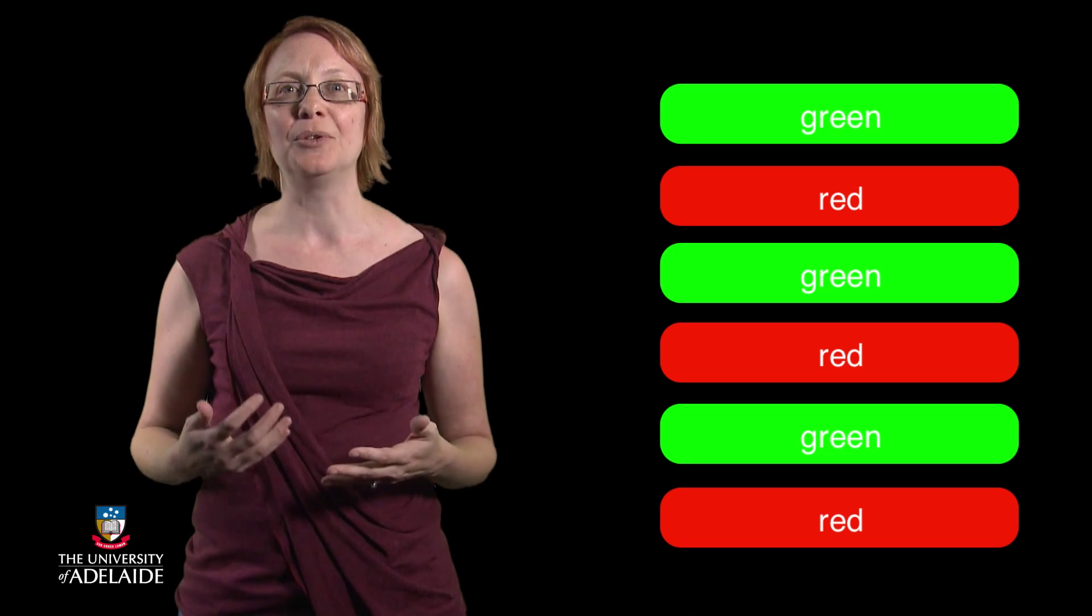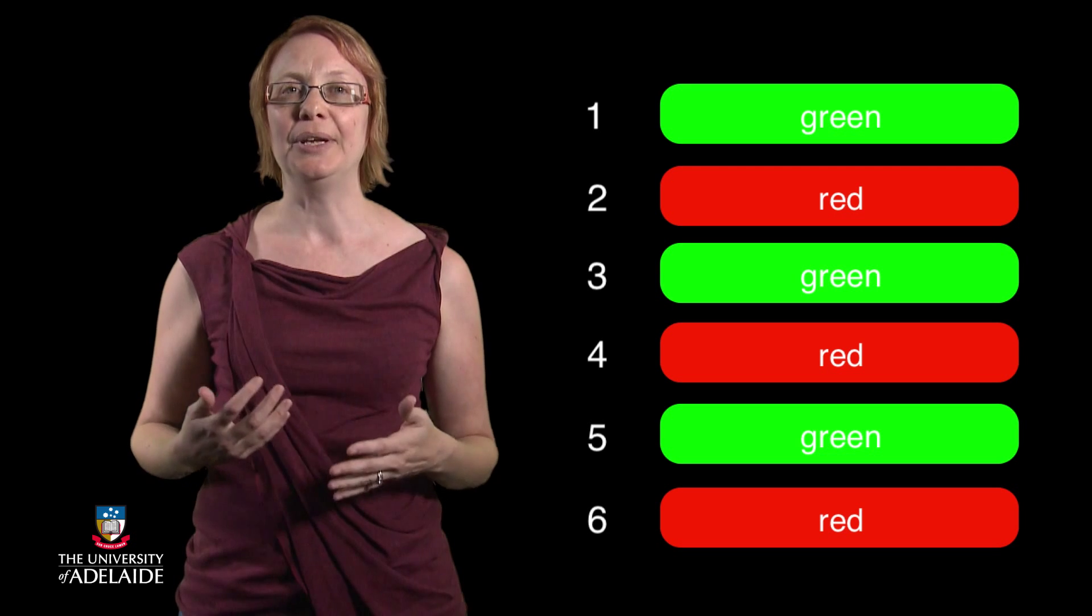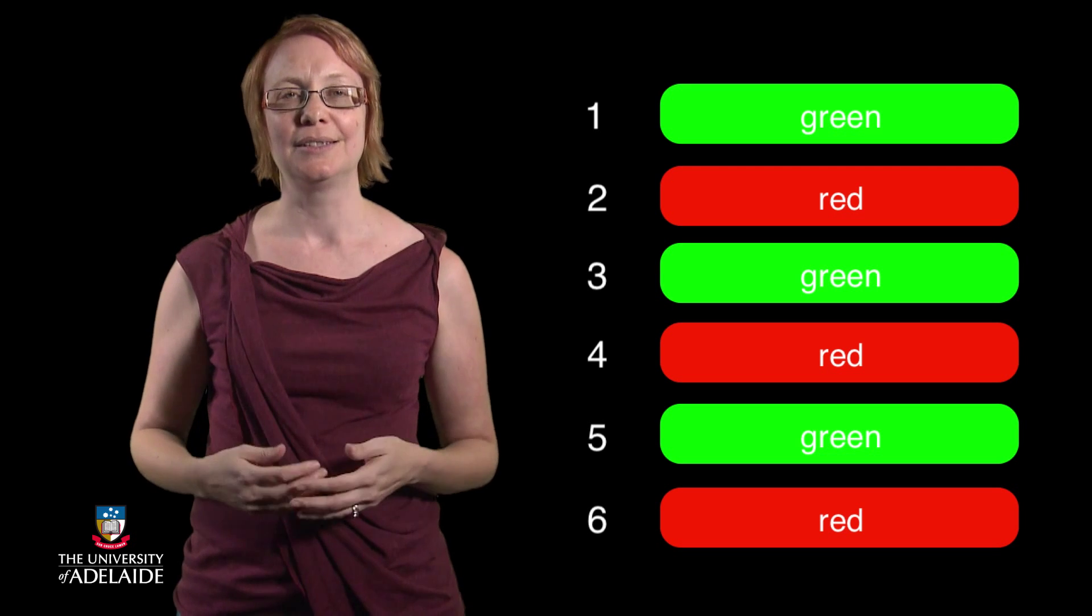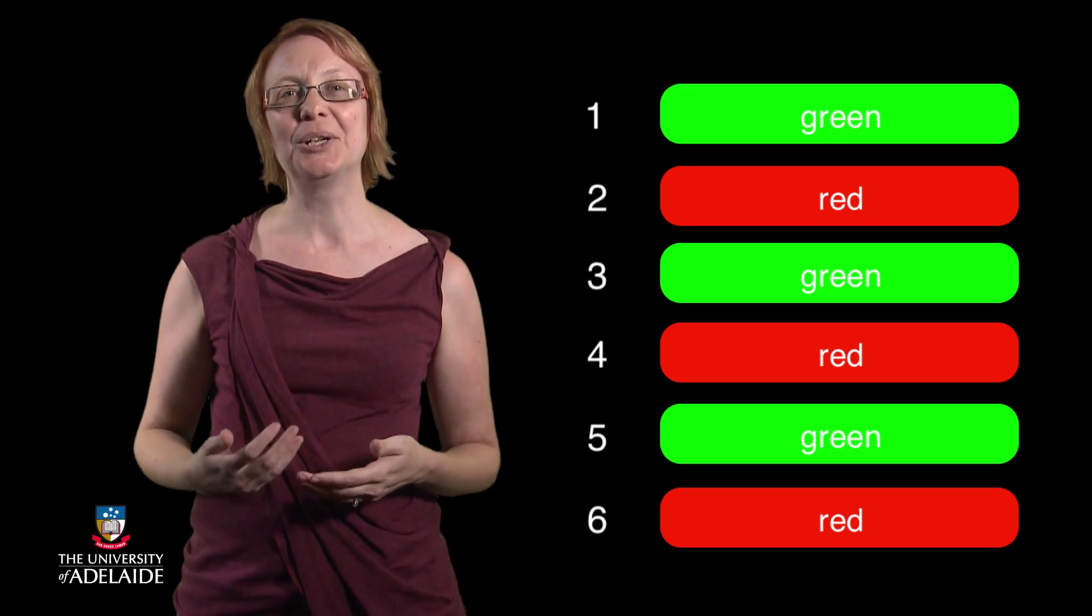That's right, every odd-numbered rectangle is green, while every even-numbered rectangle is red. We can include a condition in our code that tests for whether the current rectangle is an odd or even-numbered rectangle, and then change the stroke color to either red or green.